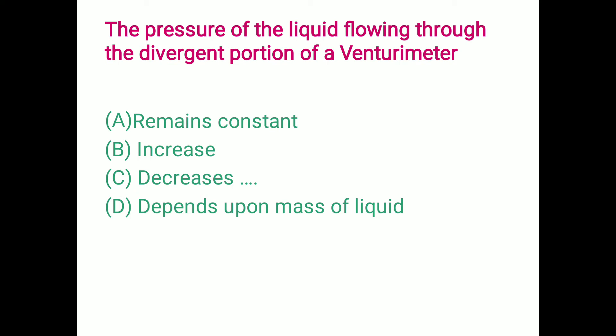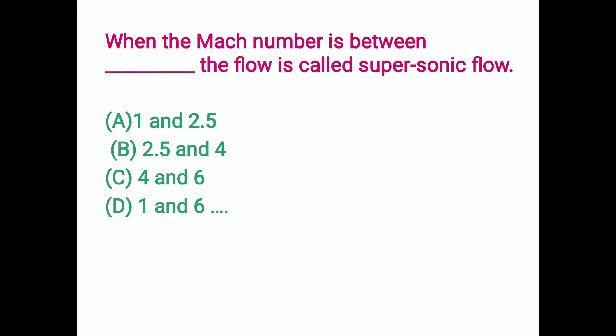The pressure of the liquid flowing through the divergent portion of a venturi meter: remains constant, increases, decreases, or depends on the mass of liquid. The answer given is option C — decreases.